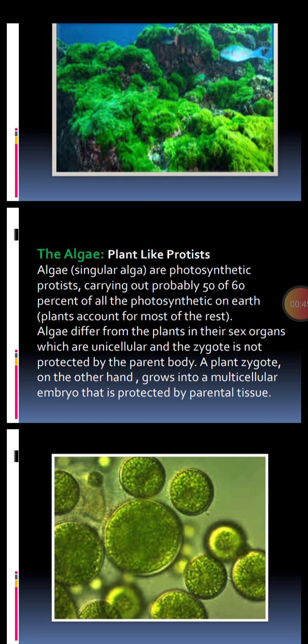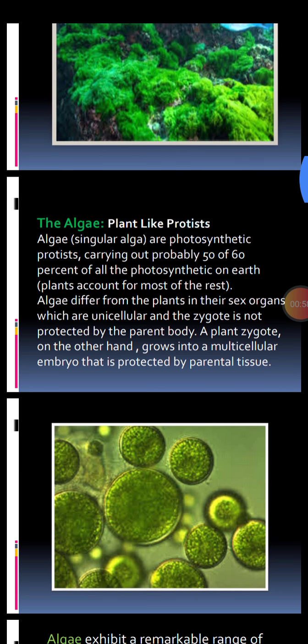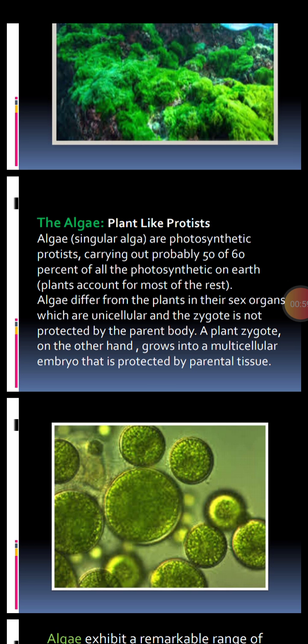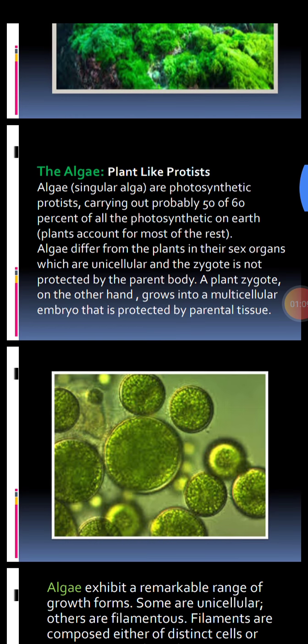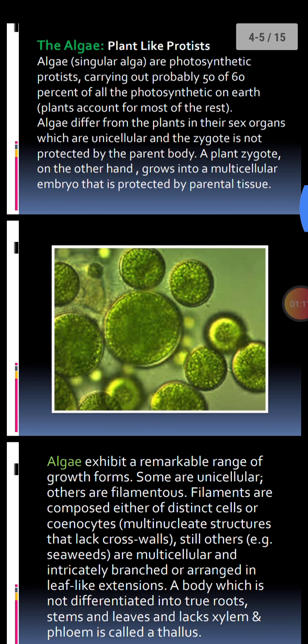Algae differ from plants in their sex organs, which are unicellular — one-celled. The zygote is not protected by the parent body. As you know, zygotes are formed by the union of sperm and egg. A plant zygote, on the other hand, grows into a multicellular embryo that is well protected by parental tissue.